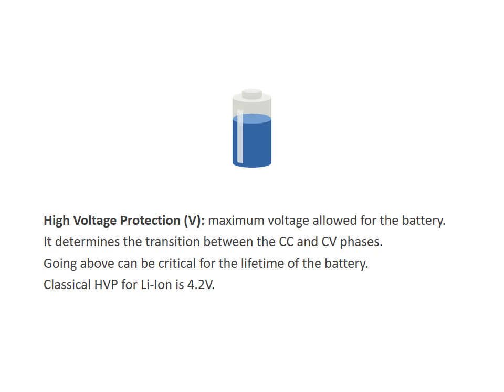The high voltage protection is the maximum voltage allowed for the battery, and determines the transition between the constant current and constant voltage phase. It is not recommended to go above this value because it is critical for the lifetime of a battery. A classical HVP is generally around 4.2V for a lithium-ion battery.